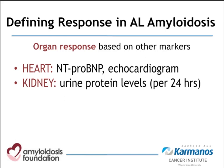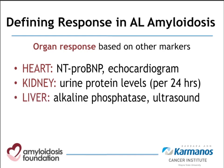To assess kidney response, we predominantly look at urine protein levels — specifically albumin in the urine — best measured on a 24-hour sample, and we want to see a significant decrease in protein spilled in the urine. As albumin levels come up, problems such as low blood pressure or leg swelling may improve. For liver response, we monitor alkaline phosphatase as part of a routine chemistry panel, and occasionally if the liver is enlarged from amyloid deposits, we may see improvement in liver size.